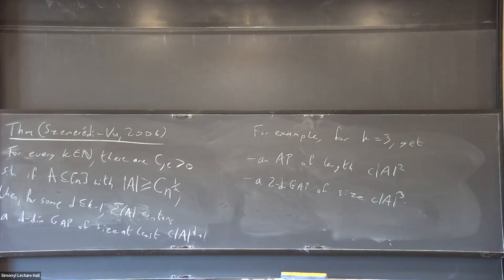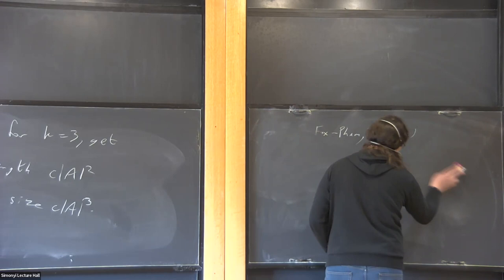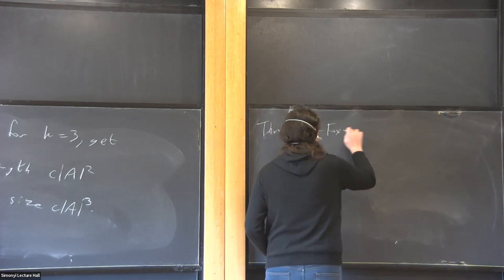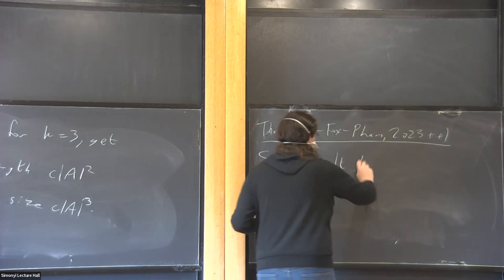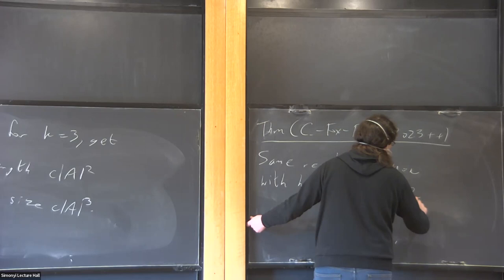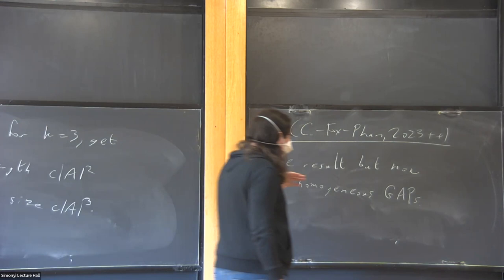Once we have this kind of result, the next question is whether we can prove a homogeneous version — and that is one of the main results of our paper. The same results but now with homogeneous GAPs. And a lot of the reason for developing this is its application to non-averaging sets, but it also has other applications that we are still working on.